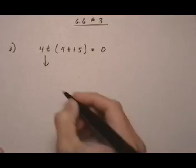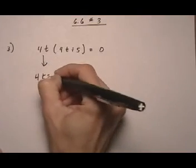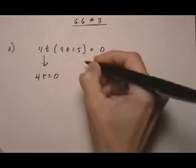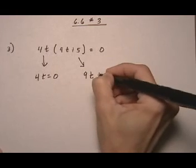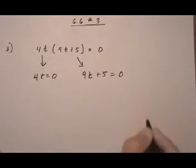So we take the first factor, four T, set it equal to zero. And then we solve for T. And then we do the second factor, nine T plus five, set it equal to zero.